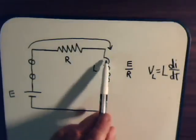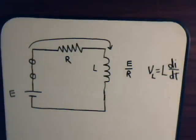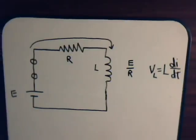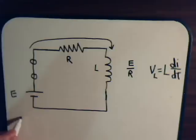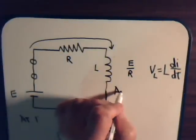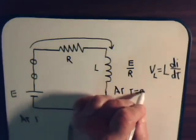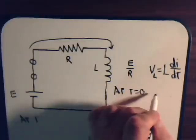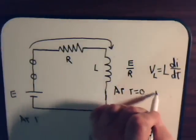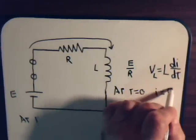But in this inductor, in this coil, there is a magnetic field there. Now if we were to remove the battery from the circuit at time t equals zero, the battery is still there and the current going through the coil is just E over R.